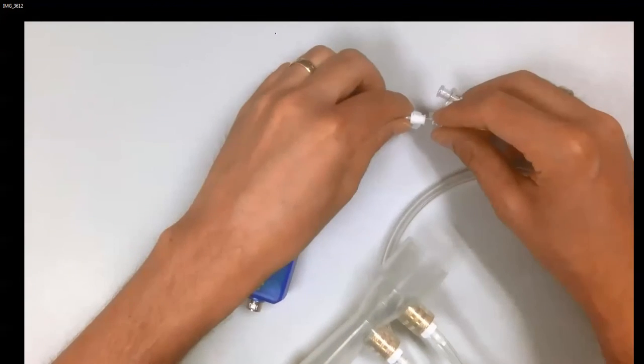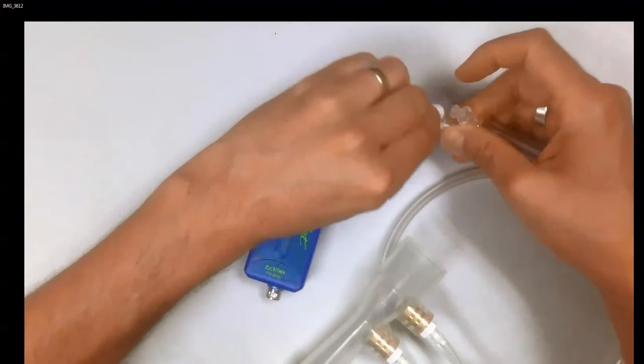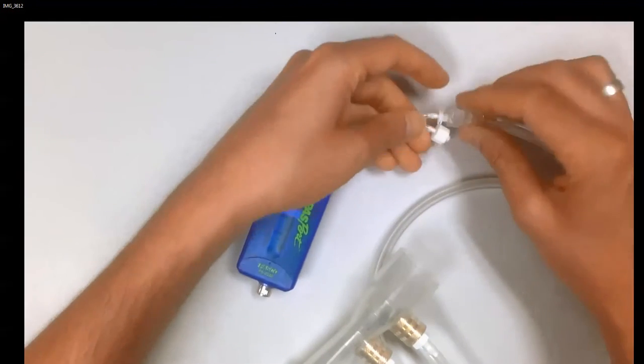So find the matching pair of pressure connectors, connect them by twisting them together, and repeat the process for the other pressure connector.